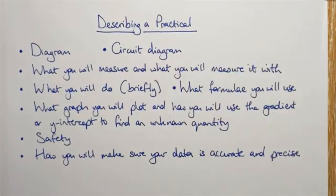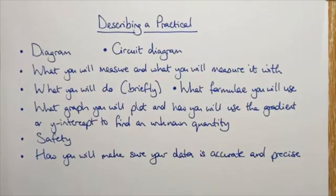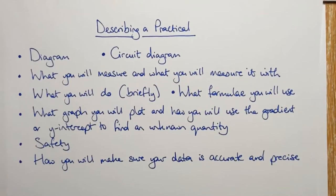Safety. If I was really making sure I'm getting all the marks, I might say have a soft mat so that the ball doesn't bounce, but it's not really that important for this one. And how will I make sure my data is accurate and precise? You can go to town on this one. Avoiding parallax when taking your height measurements, making sure your ruler or tape measure is vertical. Make sure the height you drop it from is large enough, so the time is long enough to give you a reasonable chance of reacting. Those are probably the main ones.